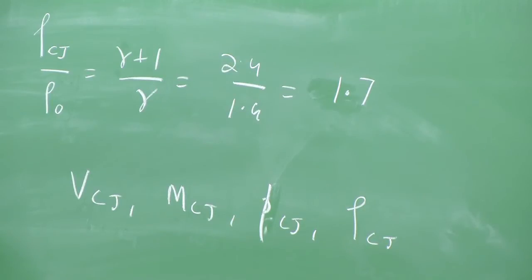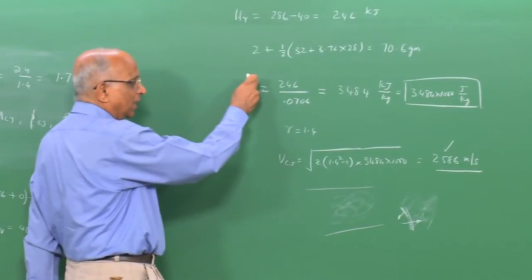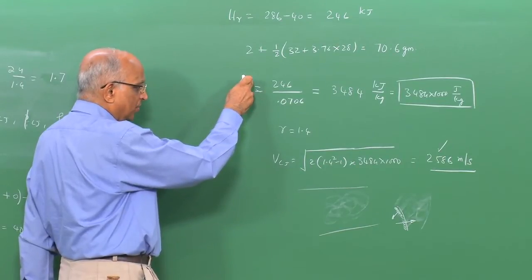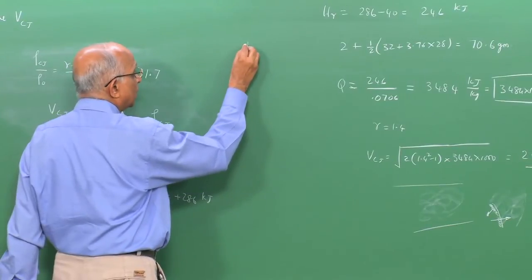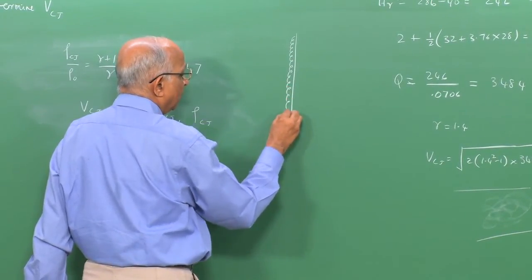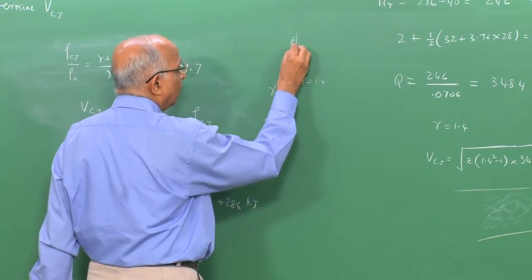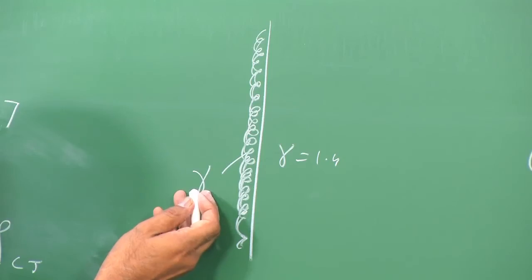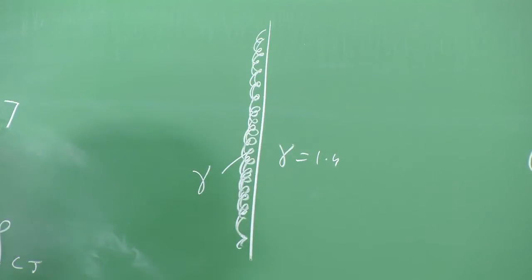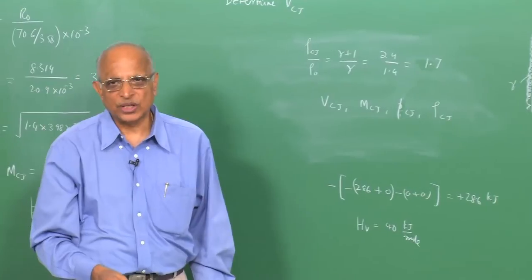We are able to get the different values: the CJ velocity, the Mach number of the CJ detonation wave, the pressure behind the detonation, and the density. These are the properties of a steady-state Chapman-Jouguet detonation. But we must note that we did not account for dissociation at high temperatures, and we used γ = 1.4 for both reactants and products — the actual products like H₂O and OH have different γ values. So our numbers may not be very accurate.